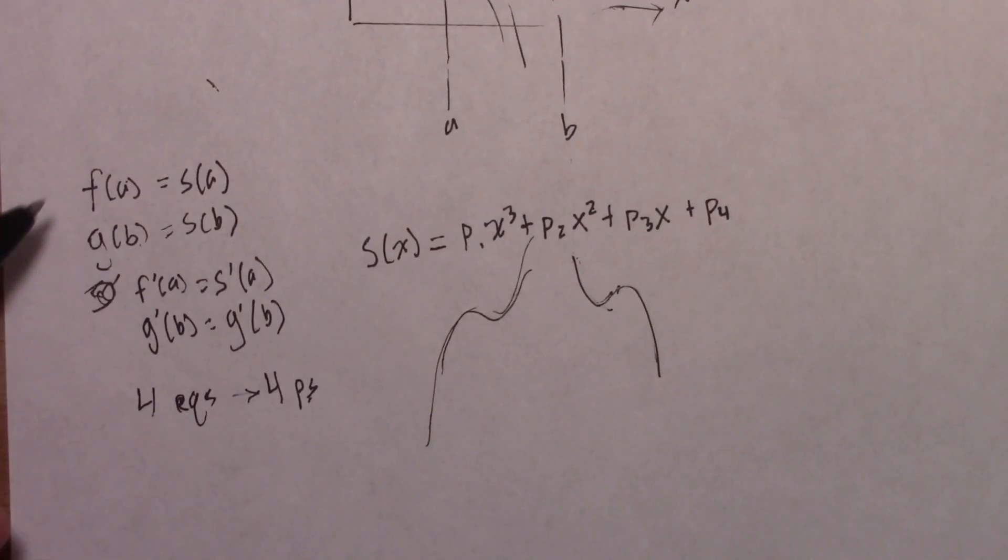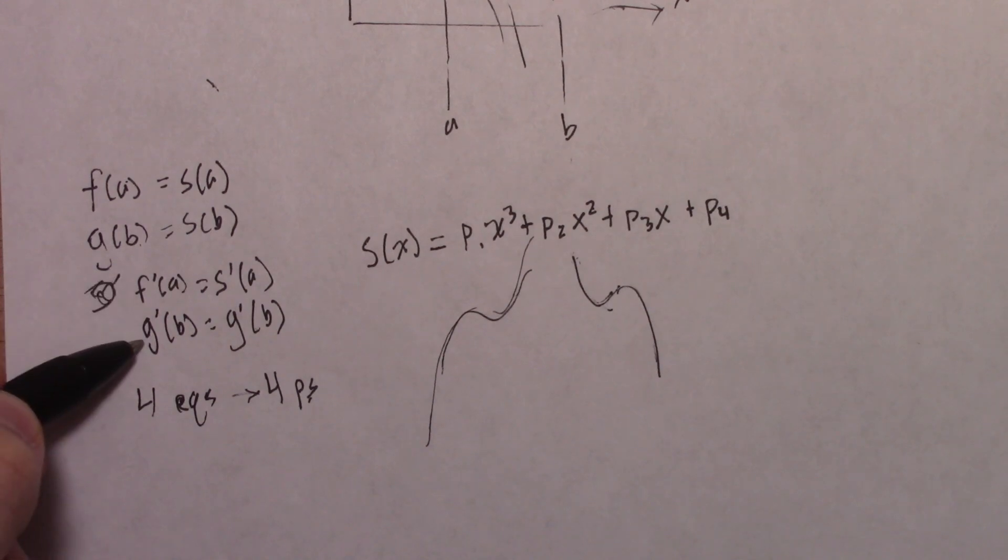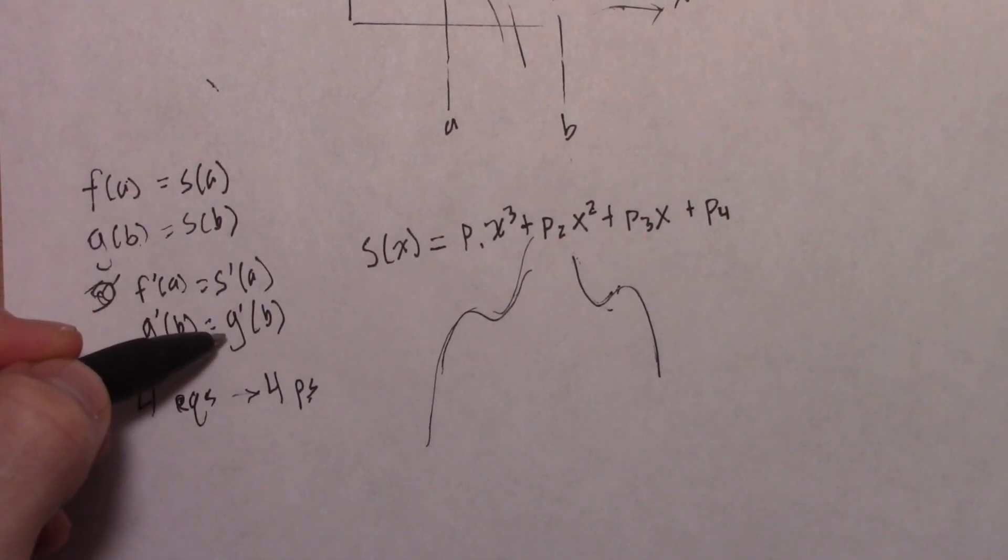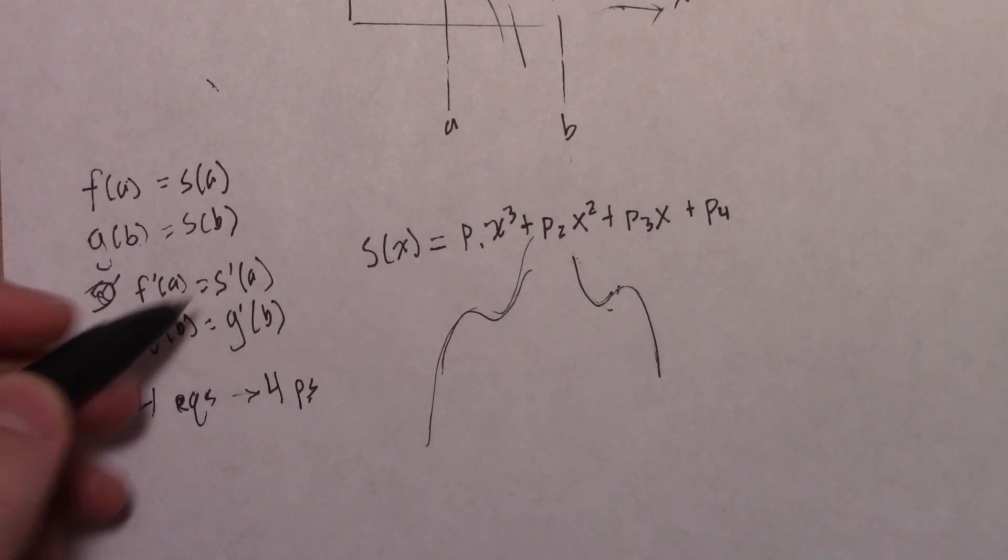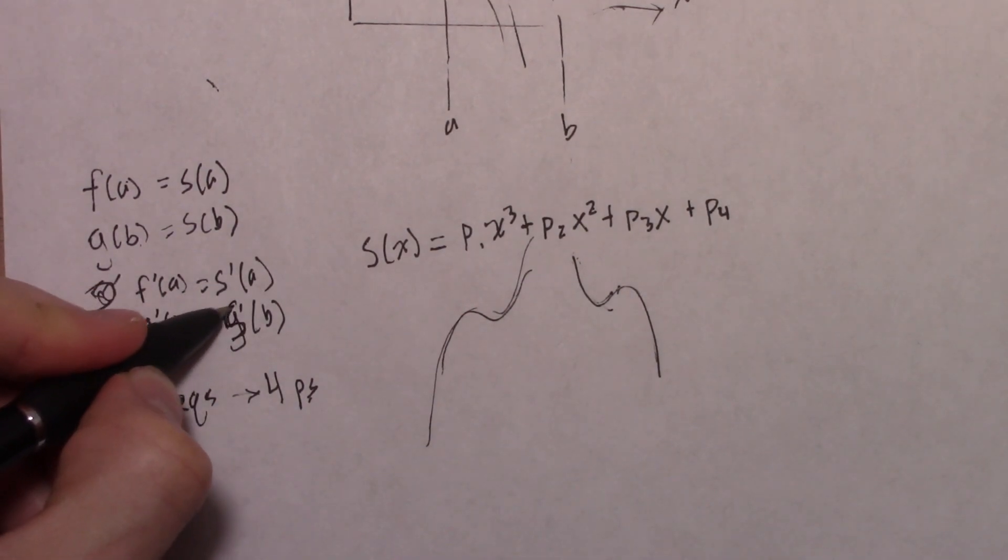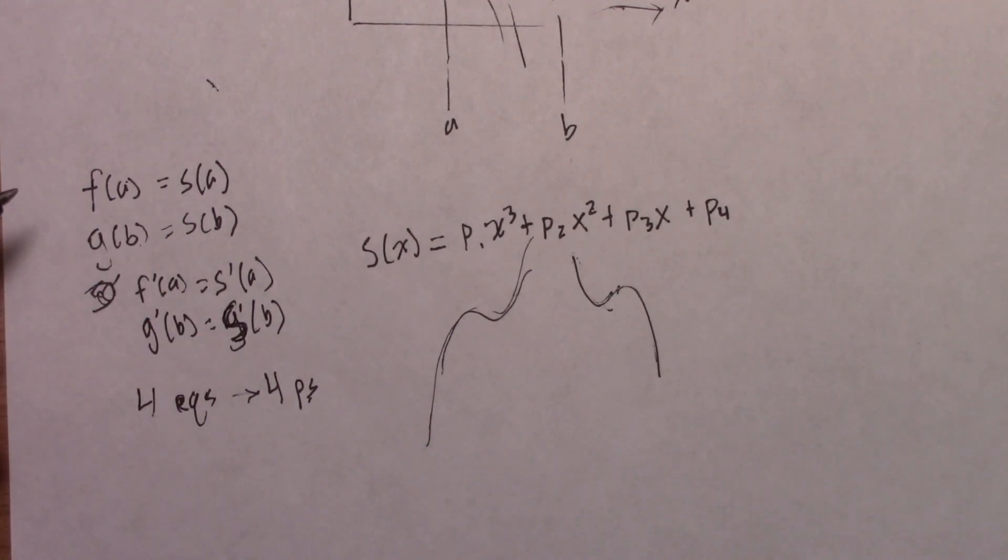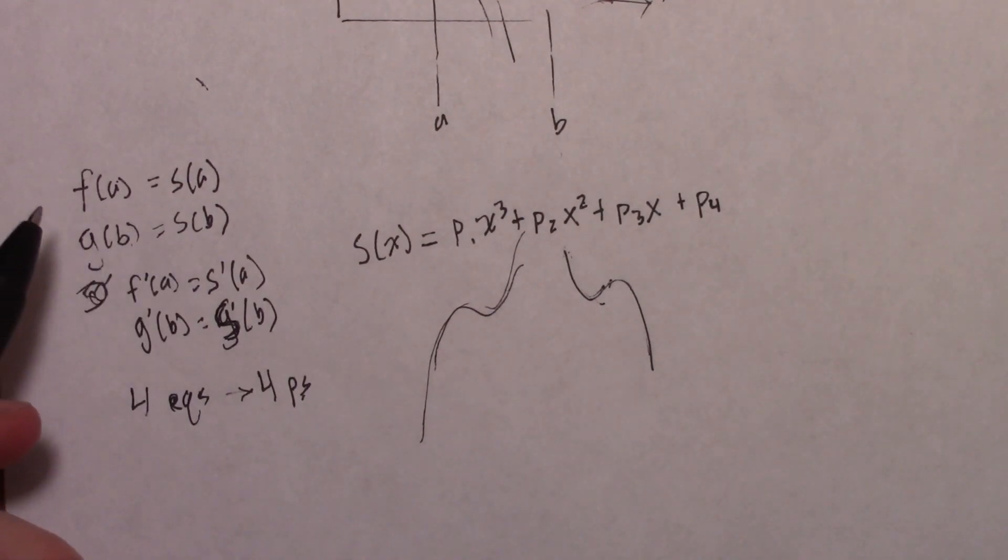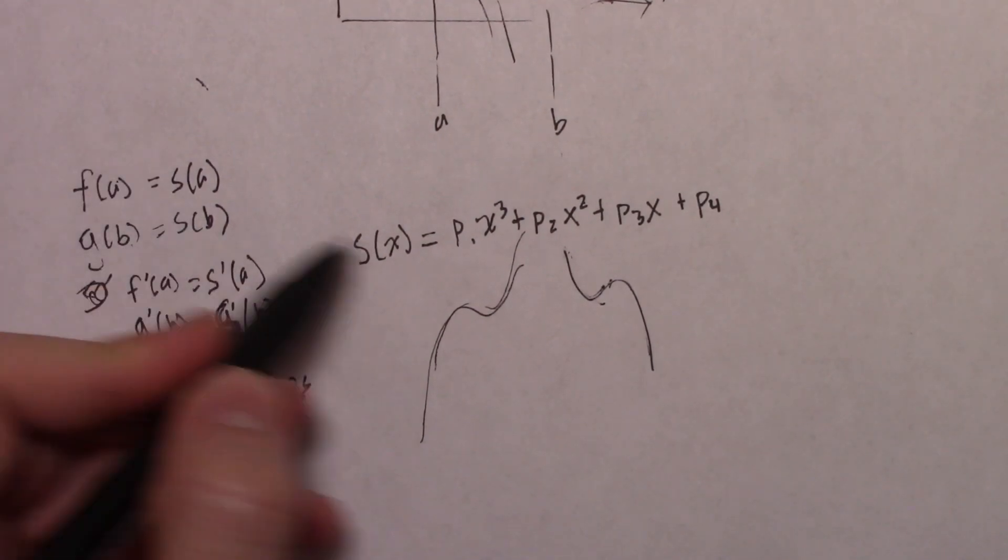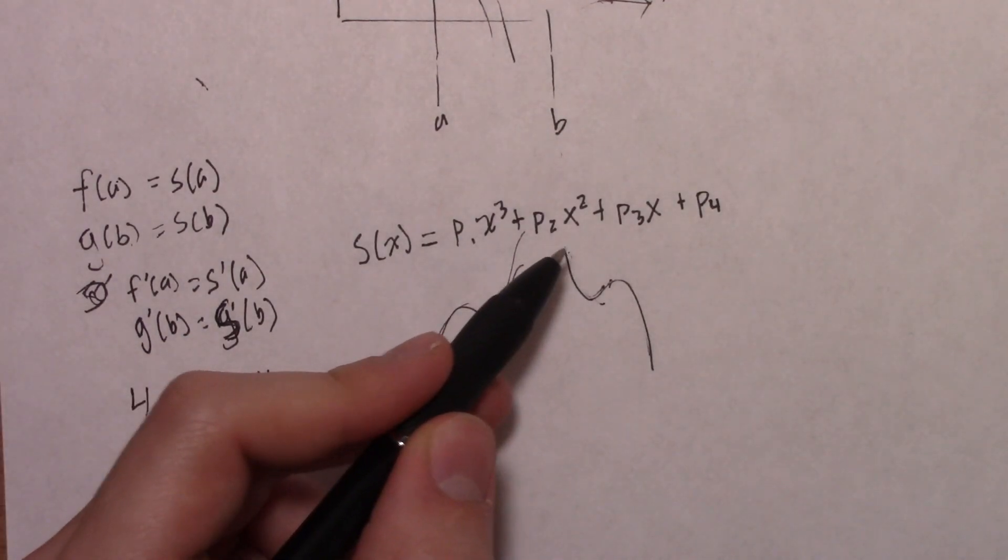Okay, we're assuming that f and g are known. So f of a, g of b, f prime of a, g prime of b will just be numbers, whereas s we're trying to figure out what s is. It should be s, not g. Whoops. That's the first of probably multiple mistakes I'll make, but we won't worry about it.